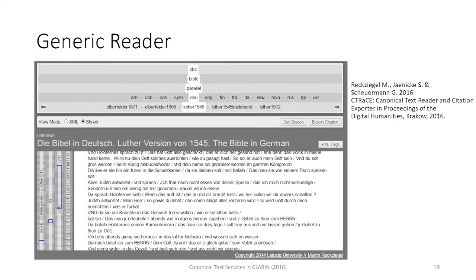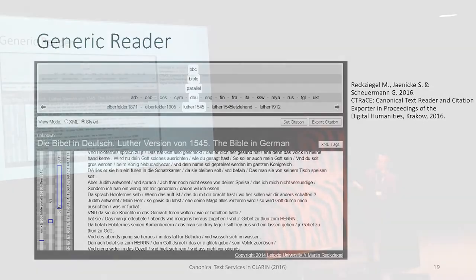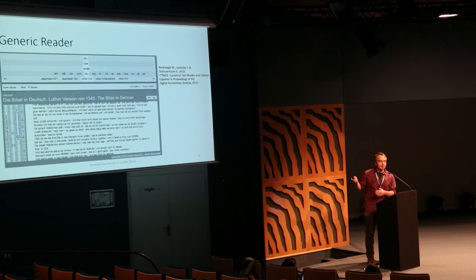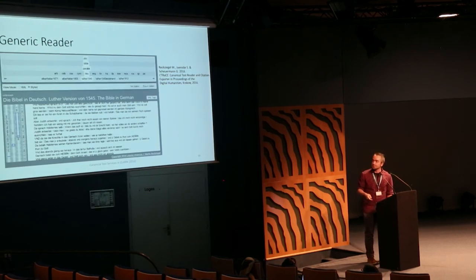You can browse through the documents. On the left side you see the structure units that this document has. Here you can see the text content. You can mark up some text content with your mouse, hit citation, and then you receive a CTS URN for this text passage.